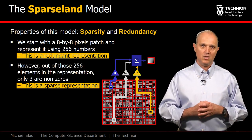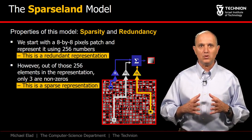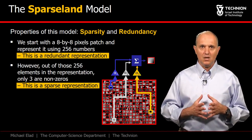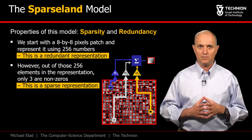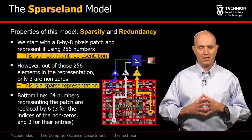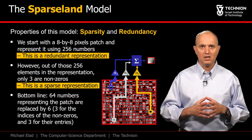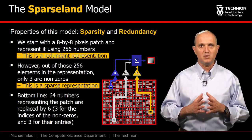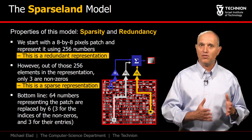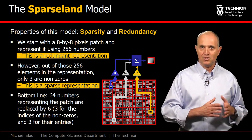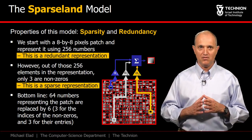On the other hand, this representation is a sparse vector containing mostly zeros. In our example, only three of its entries are non-zeros. In this way, Sparsland suggests describing our original 64-pixel patch by only six values: three for the non-zero coefficients, and three for the location in the representation vector.